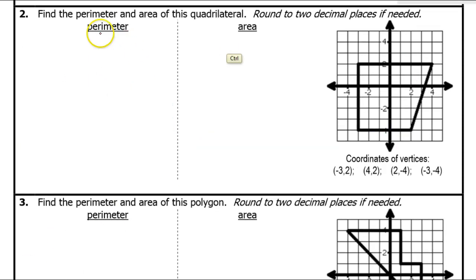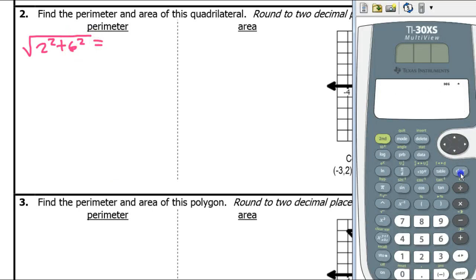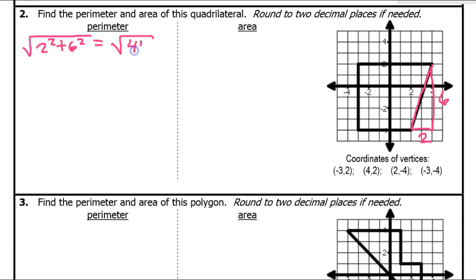Alright, let's go again for problem number 2 — perimeter and area. Let's start with the perimeter. I'm going to start with this length right here in red, and again I'm going to use the Pythagorean theorem. The horizontal length is 2 and the vertical length is 6, so that particular length is going to be the square root of 2 squared plus 6 squared, which is 40. So that length is the square root of 40.